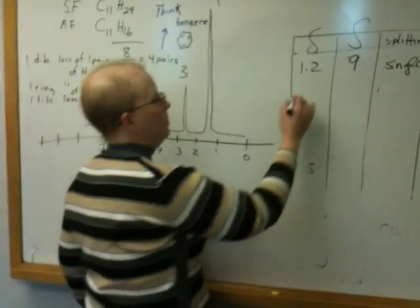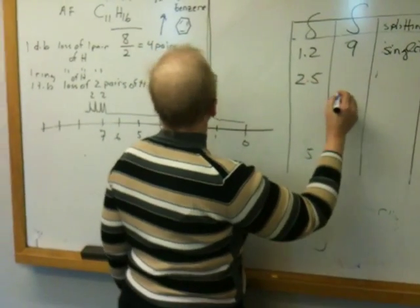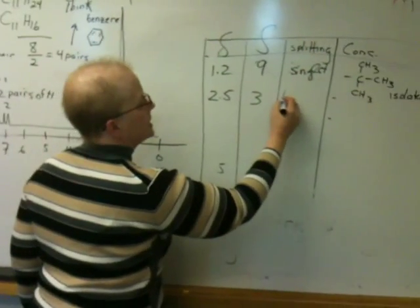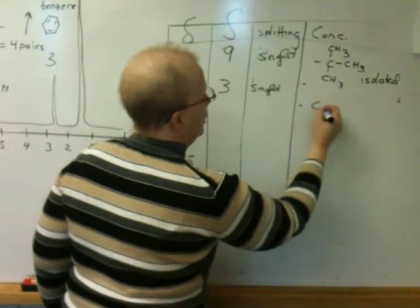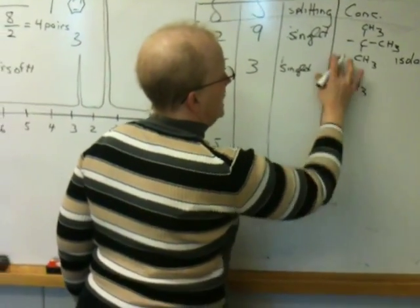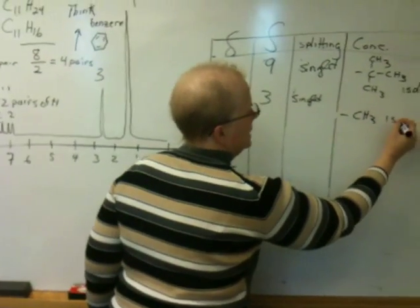The next one is at 2.5. It has an area of 3. It's a singlet. It's a methyl, in all likelihood. That's the best guess. And once again, it's isolated.